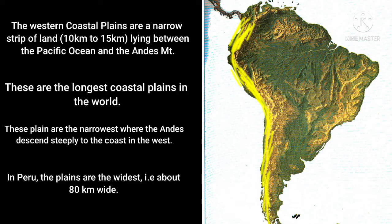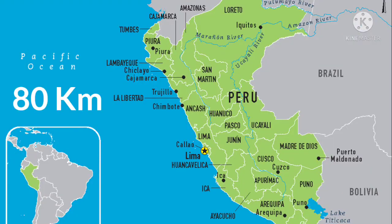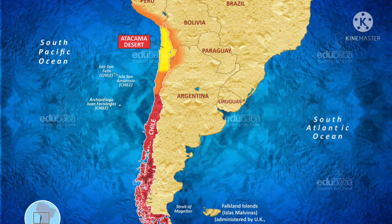Towards the western side, these plains are quite narrower. In Peru, these plains are the widest — it is about 80 kilometers long from east to west. So we can say that Peru has the widest extent of the coastal plains of South America.